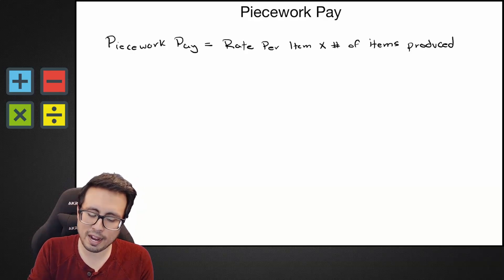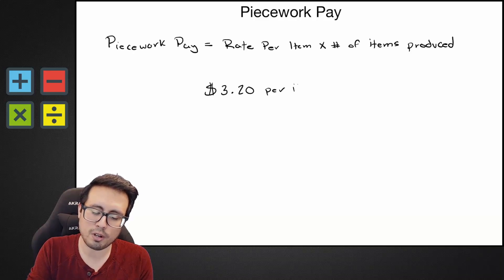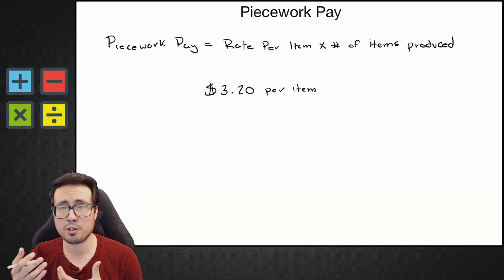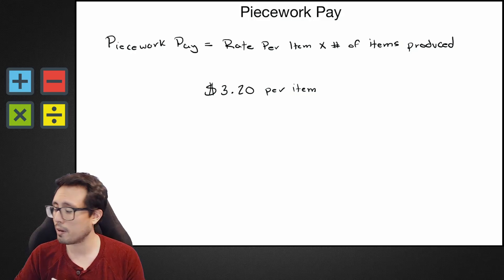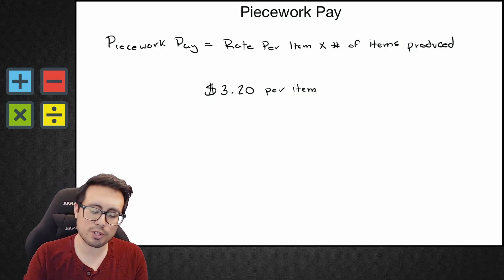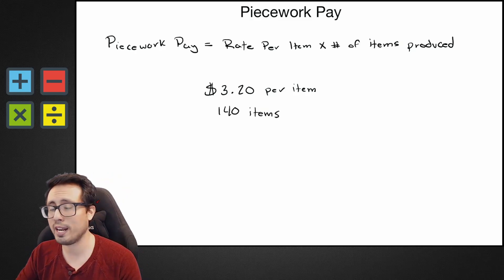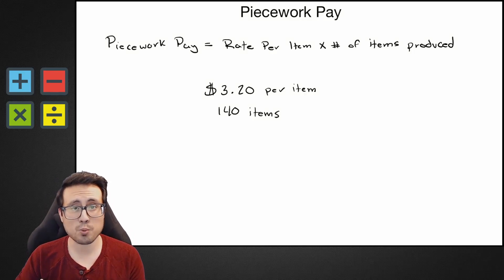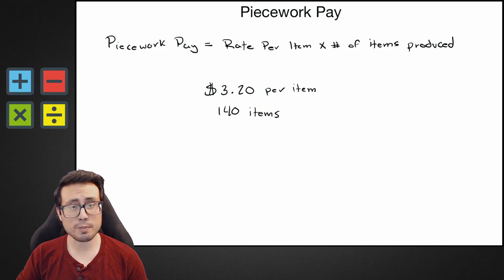Let's take a look at one more example. Let's say we have a job where we get paid $3.20 per item produced. I don't know what it is that we're producing, but we get paid $3.20 for each item. Today I happened to produce 140 items — a very productive day. Now I want to know what is my piecework pay?